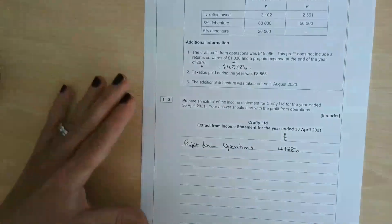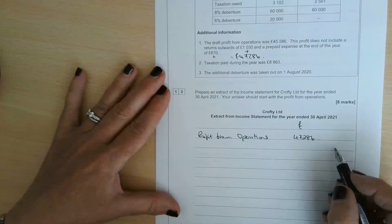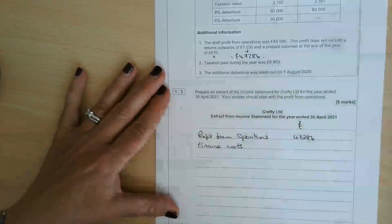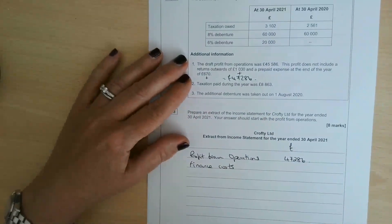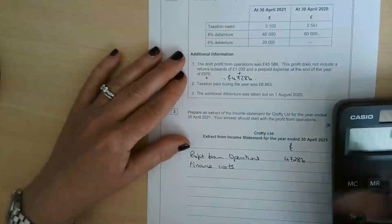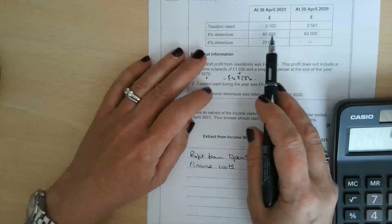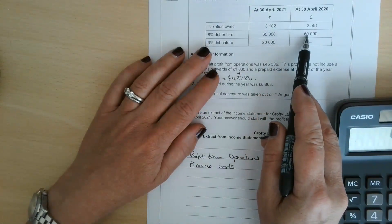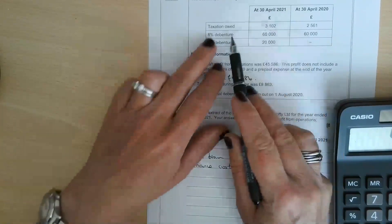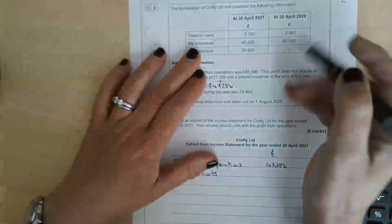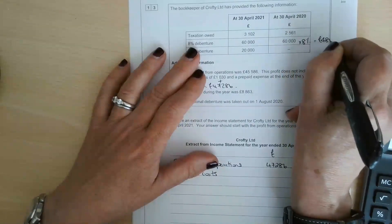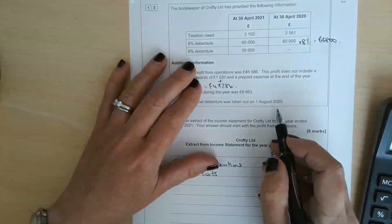Next line after profit from operations is finance costs. This is any interest that is due on loans and debentures, whether or not it's been paid during the year. It doesn't tell us how much they've actually paid, but they had a £60,000 debenture outstanding throughout the whole year at 8%, so £60,000 times 8% gives £4,800 in interest.